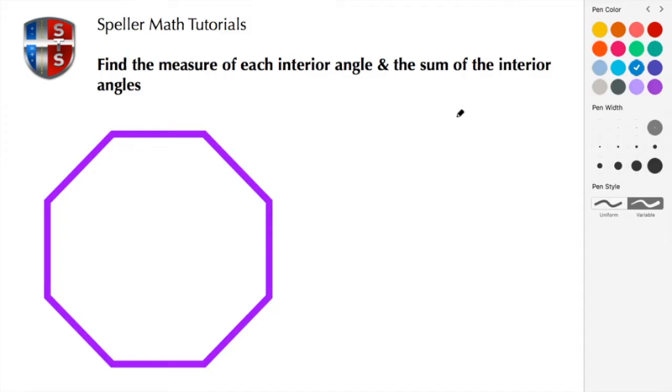So what we're tasked to do here is we need to find the measure of each interior angle and the sum of the interior angles. Here our regular polygon, or closed figure, is an octagon and for a polygon to be known as regular that means that each one of these sides are congruent and it also means that each of these angles are also congruent.